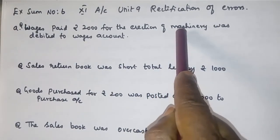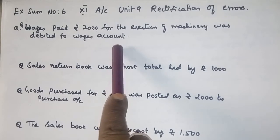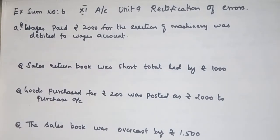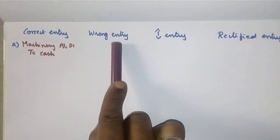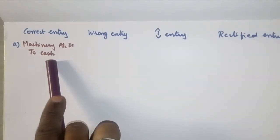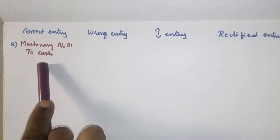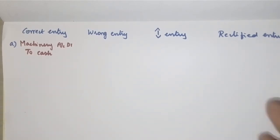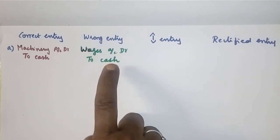The correct entry is machinery account debit to cash. This is an asset purchase and it is not an expense. So we should not debit wages. The correct entry is machinery account debit to cash account. But the wrong entry made was wages account debit to cash. It was wrongly debited to wages account.